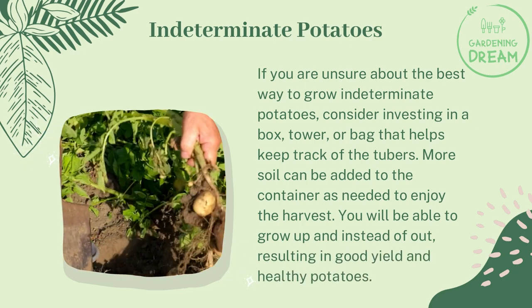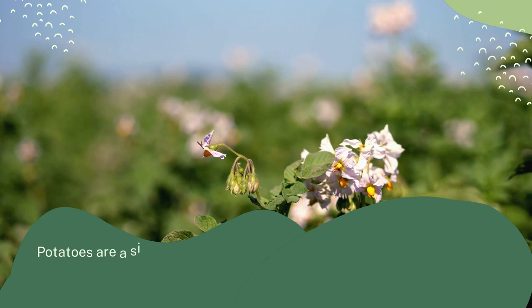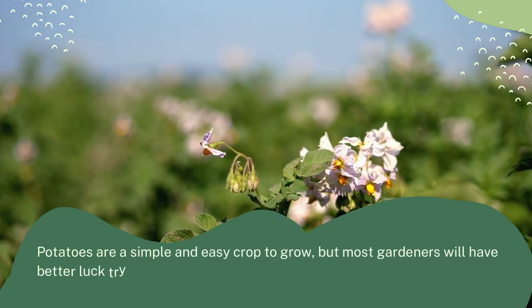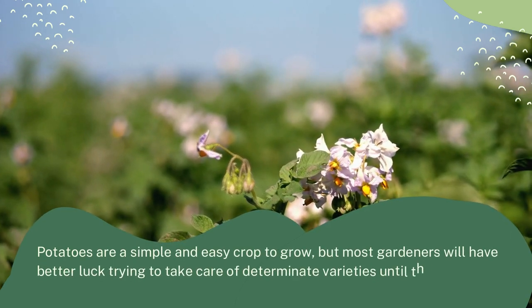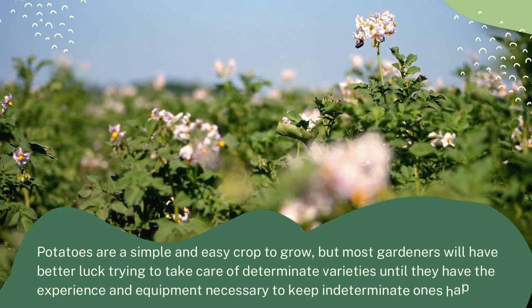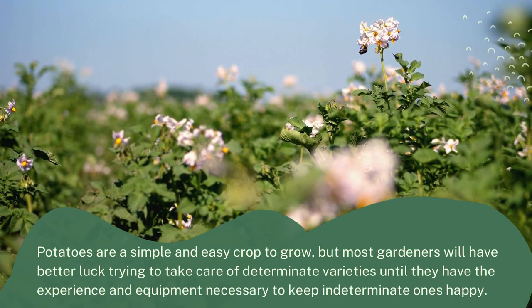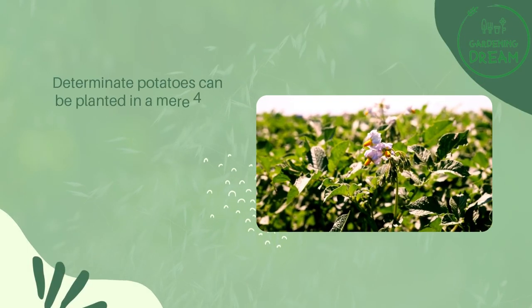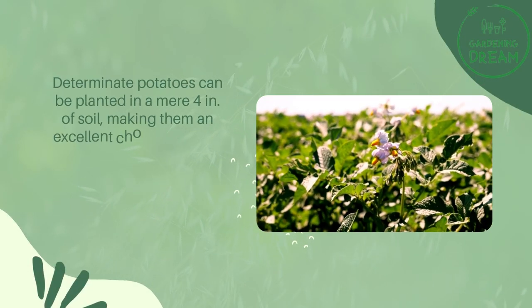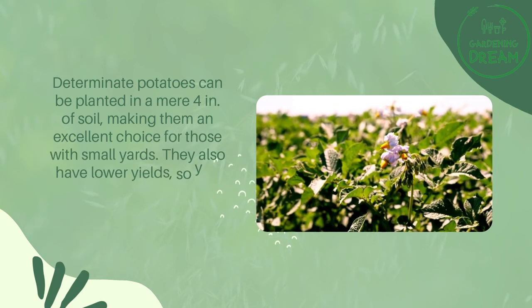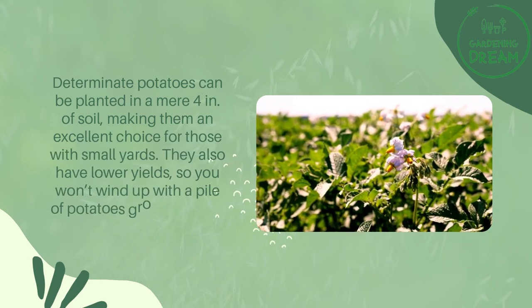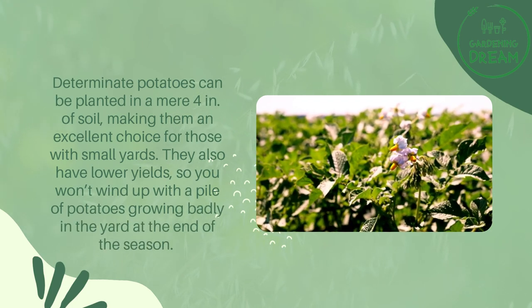More soil can be added to the container as needed, allowing you to grow up instead of out, resulting in a good yield and healthy potatoes. Potatoes are a simple and easy crop to grow, but most gardeners will have better luck with determinate varieties until they have the experience and equipment for indeterminate ones. Determinate potatoes can be planted in a mere four inches of soil, making them an excellent choice for those with small yards. They also have lower yields, so you won't wind up with a pile of potatoes at the end of the season.